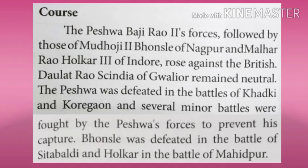Peshwa Baji Rao II's forces, followed by those of Mudhoji II Bhonsle of Nagpur and Malhar Rao Holkar III of Indore, rose against the British. Daulat Rao Sindhia of Gwalior remained neutral. The Peshwa was defeated in the battles of Khadki and Koregaon, and several minor battles were fought by the Peshwa's forces to prevent his capture. Bhonsle was defeated in the battle of Sitabaldi and Holkar in the battle of Mahidpur.